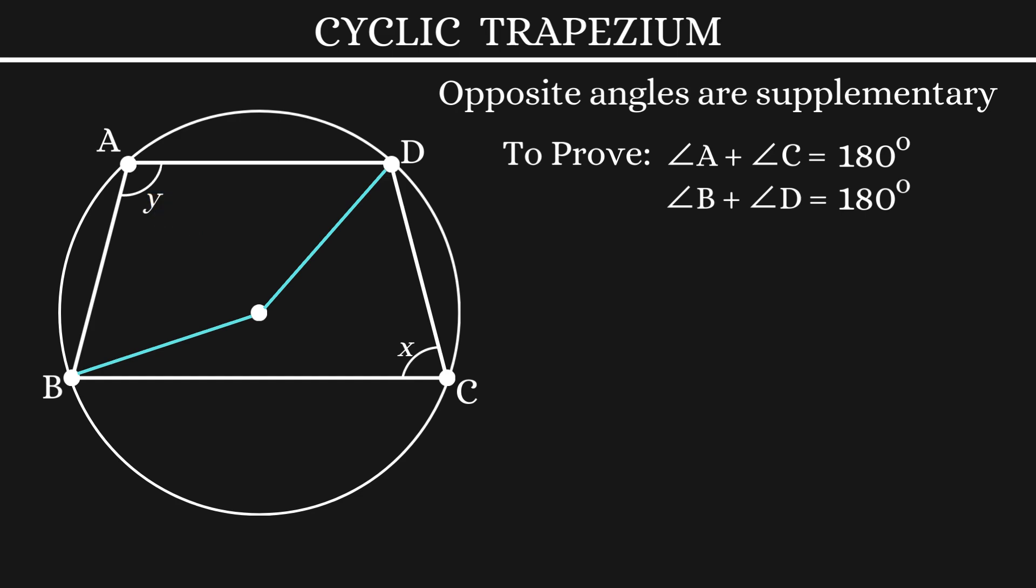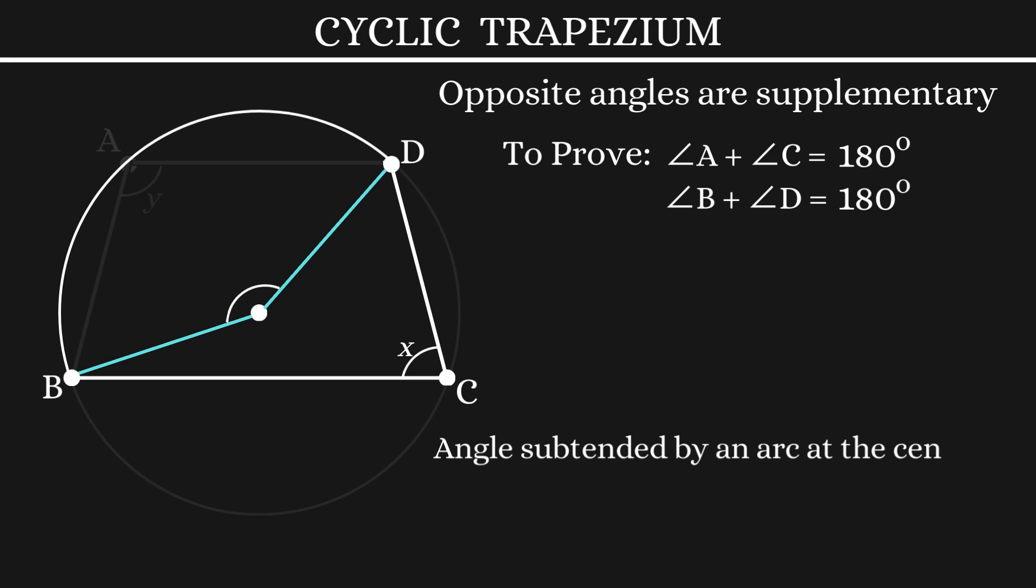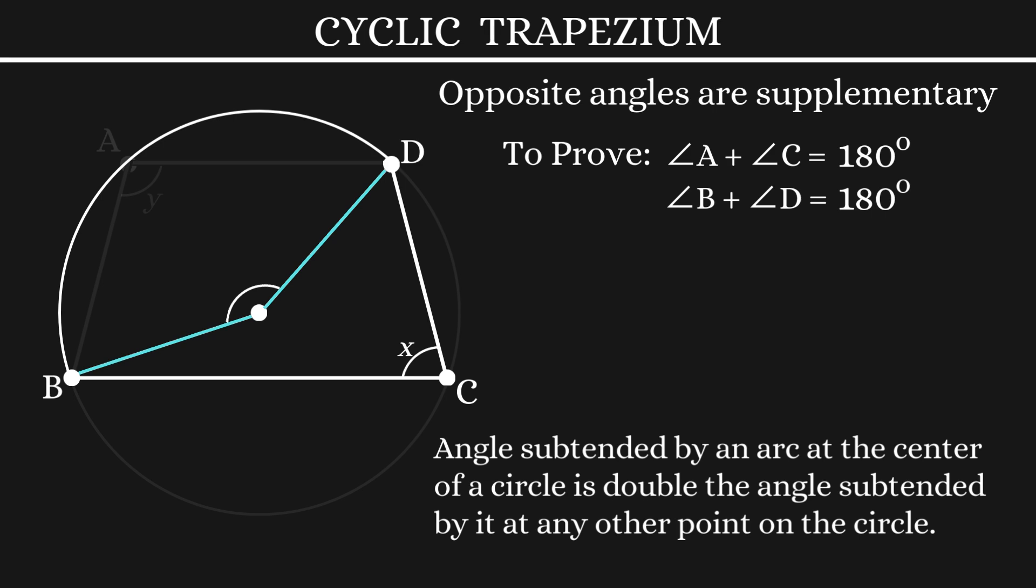If you note carefully, this is an arc which subtends angle X at point C on the circumference. The same arc subtends this angle at the center. We know that the angle subtended by an arc at the center of a circle is double the angle subtended by the same arc at any point on the circumference. This means that the angle here becomes 2X.